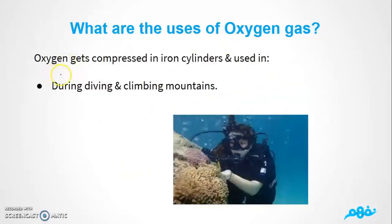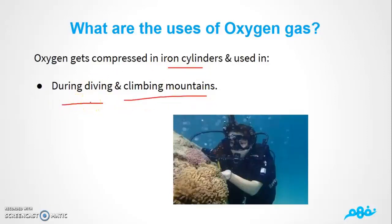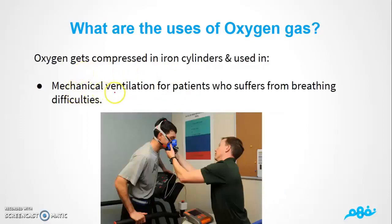We also need oxygen gas compressed in iron cylinders. These cylinders are used: number one, during diving and climbing mountains — when diving, you need to breathe underwater, so oxygen is compressed into iron cylinders to use underwater. Also, when climbing to high altitudes, oxygen levels decrease with increasing elevation, so you need the cylinder. Additionally, oxygen is used in mechanical ventilation for patients who suffer from breathing difficulties.